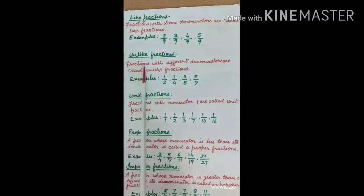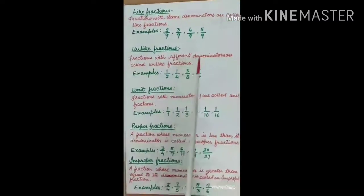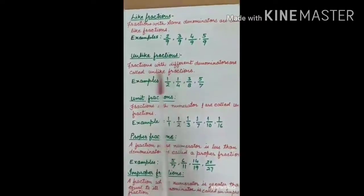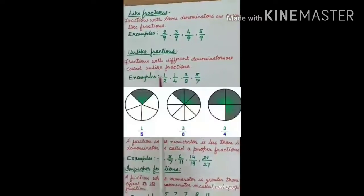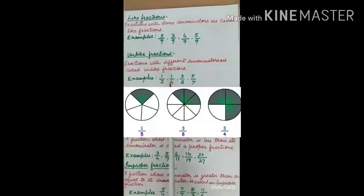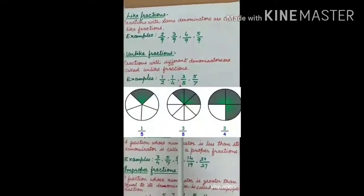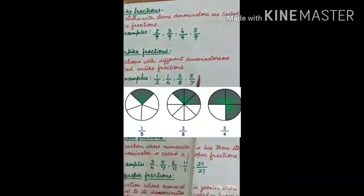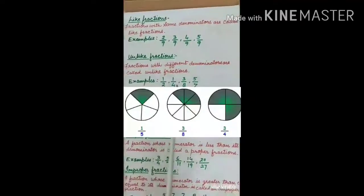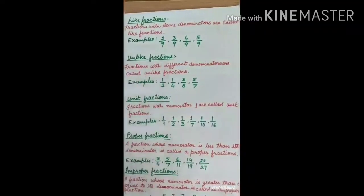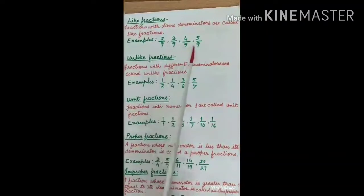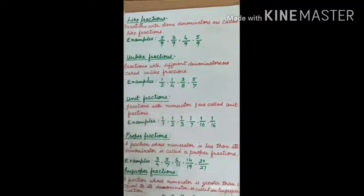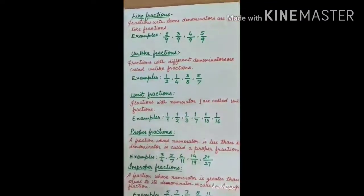Unlike fractions: fractions with different denominators are called unlike fractions. For example, 1 by 2, 1 by 4, 3 upon 8, and 5 upon 7. In all these fractions, the denominators are different, so these are unlike fractions. To summarize: like fractions have the same denominator, while unlike fractions have different denominators.